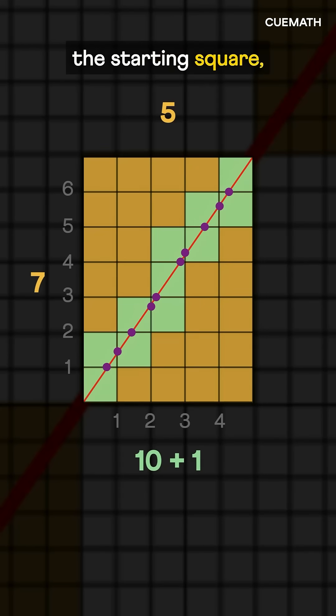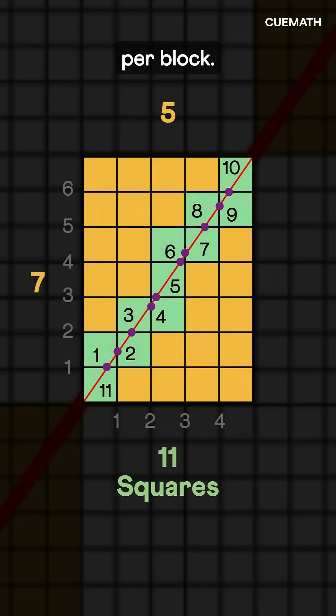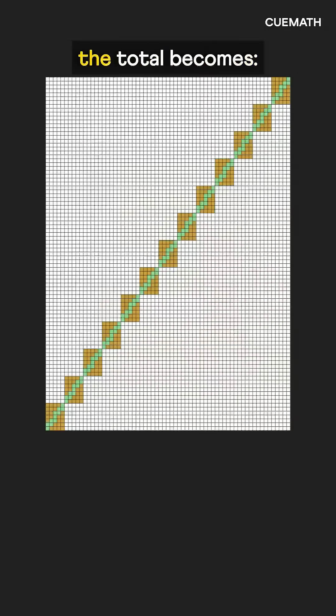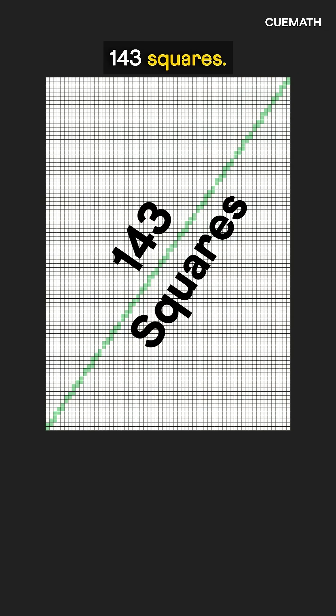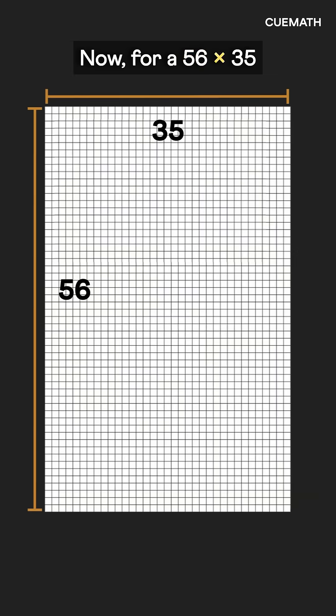Including the starting square, that's 11 squares per block. With 13 such blocks, the total becomes 13 times 11 or 143 squares. Now for a 56 by 35 rectangle, how many unit squares does its diagonal pass through?